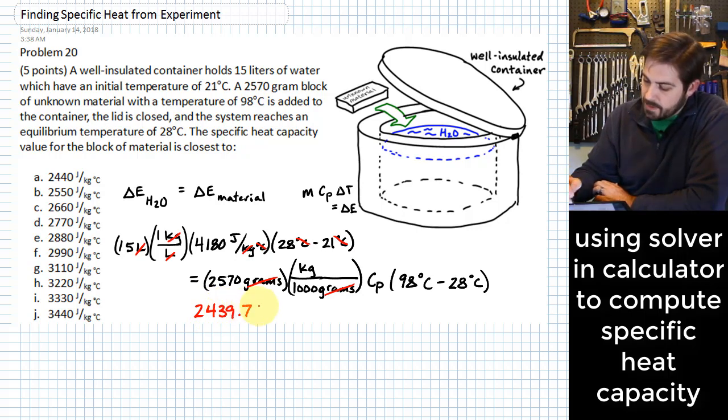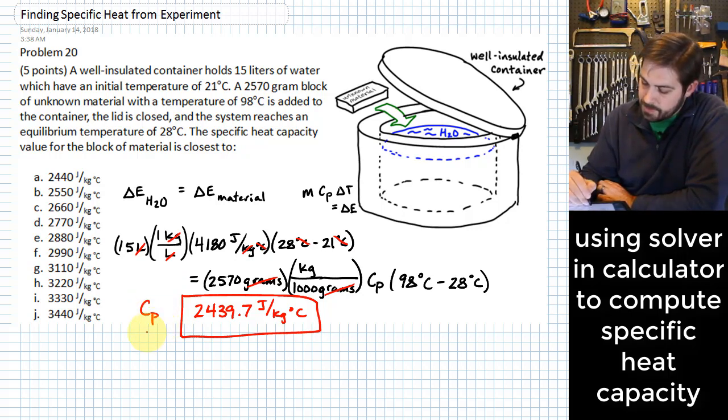And this is in joules per kilogram degree C. This is CP for the water—or excuse me, for the material.